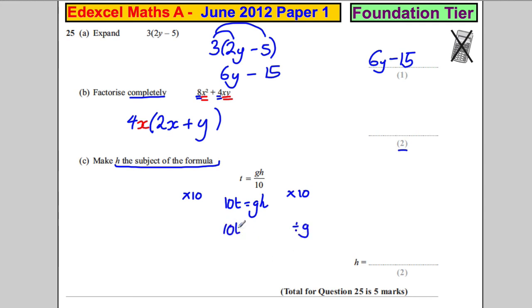And we would get 10t. And we can write that this divided by g would therefore equal h. And so we write our answer as 10t divided by g. And we're done.